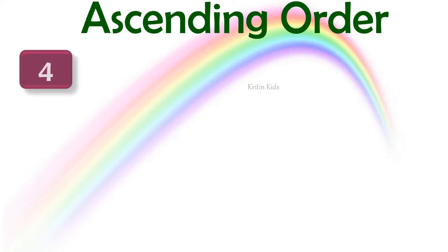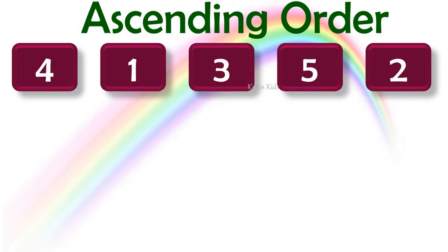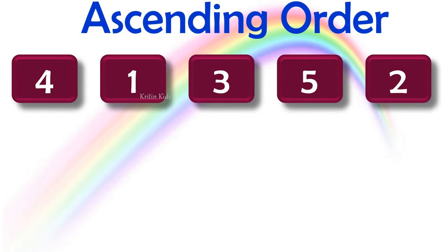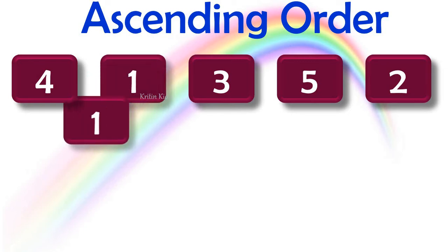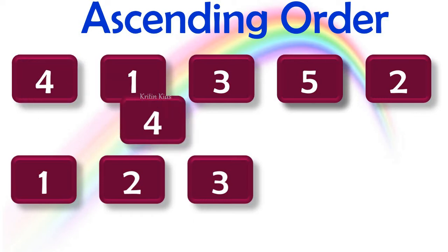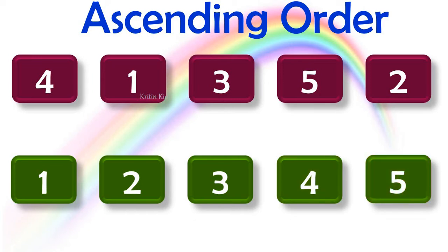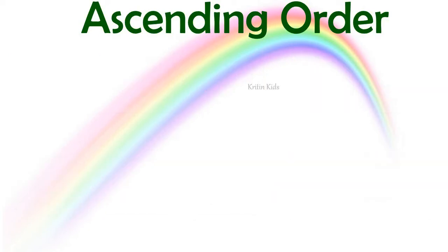Let's take an example: 4, 1, 3, 5, 2. Are these numbers in ascending order? No. Let's arrange them in ascending order, i.e., from smallest number to the biggest number: 1, 2, 3, 4, 5. These numbers are in ascending order.